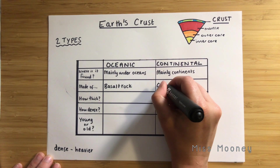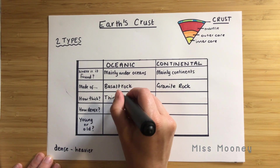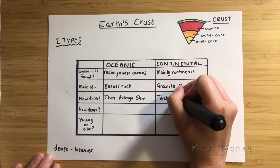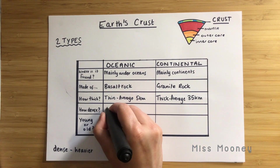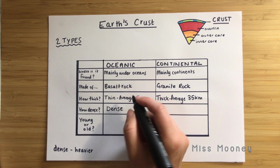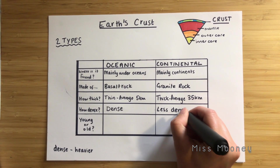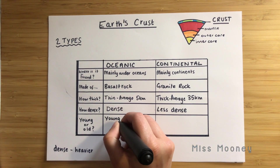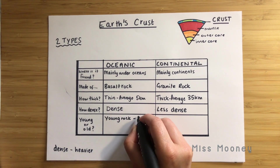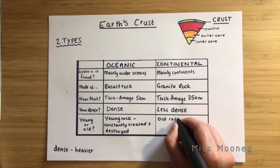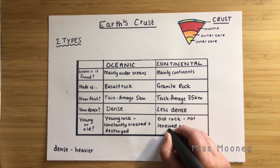Oceanic rock is made up of basalt and continental rock is made up of granite. Oceanic rock is thinner, averaging about five kilometers thick, while continental rock averages about 35 kilometers thick — so much thicker. Although oceanic crust is thinner, it is extremely dense, making it much heavier, whereas continental crust is less dense. Oceanic crust is younger rock; its density causes it to sink into the mantle and therefore it's constantly being melted, destroyed, and recreated. Continental crust, however, is extremely old — it doesn't get renewed or destroyed because it is less dense and doesn't sink into the mantle.